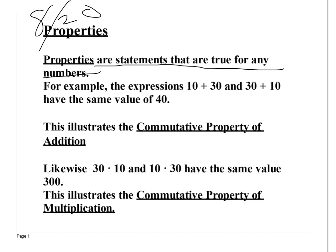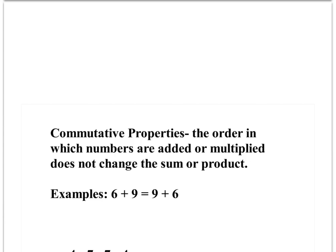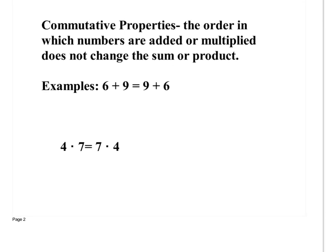Commutative is spelled 'co' — change order. Use that connection: when you see commutative, the first two letters tell you what you're doing — changing the order. The definition: commutative property is when the order in which numbers are added or multiplied does not change the sum or product. Six plus nine equals nine plus six, both equal 15. Four times seven and seven times four both give 28.